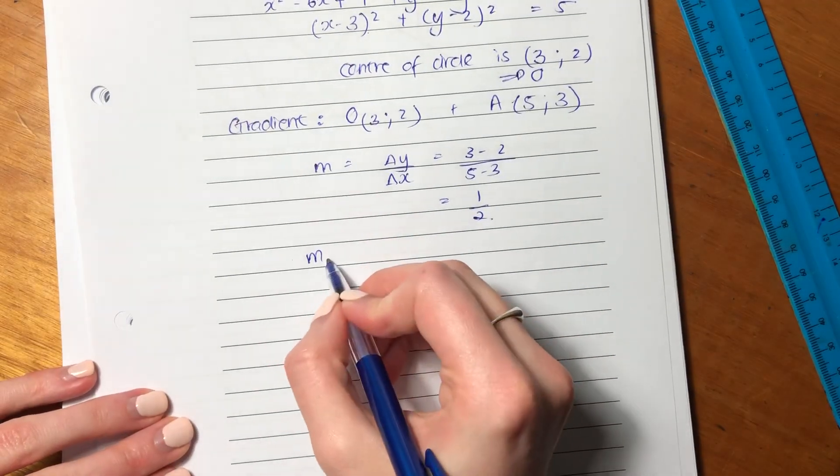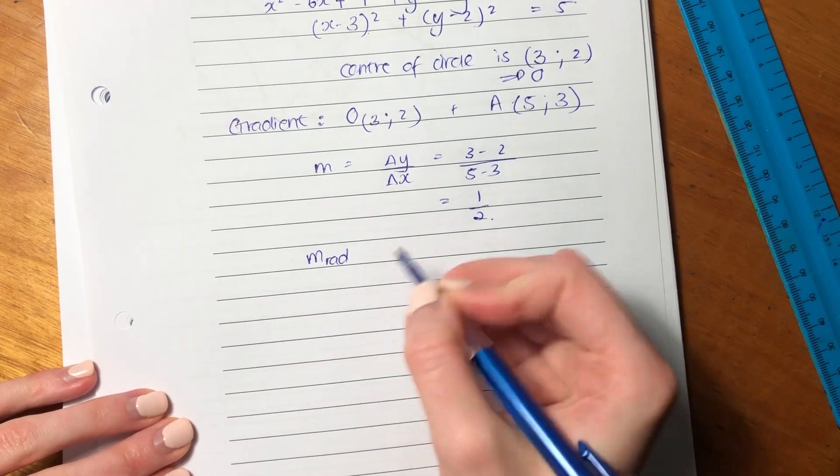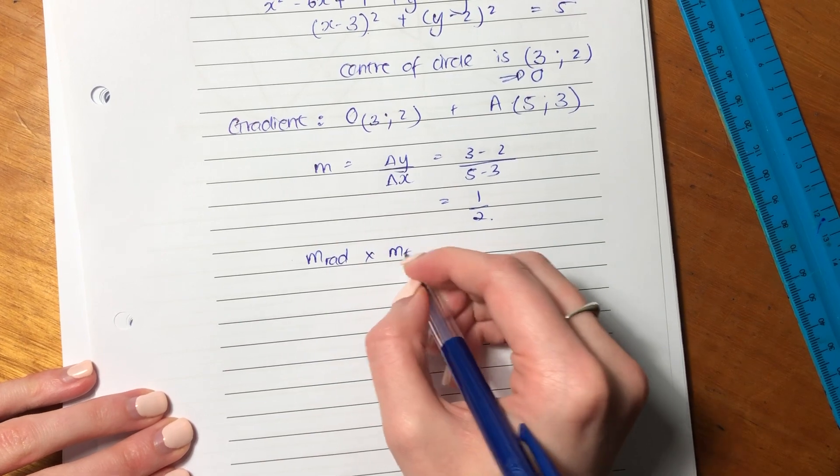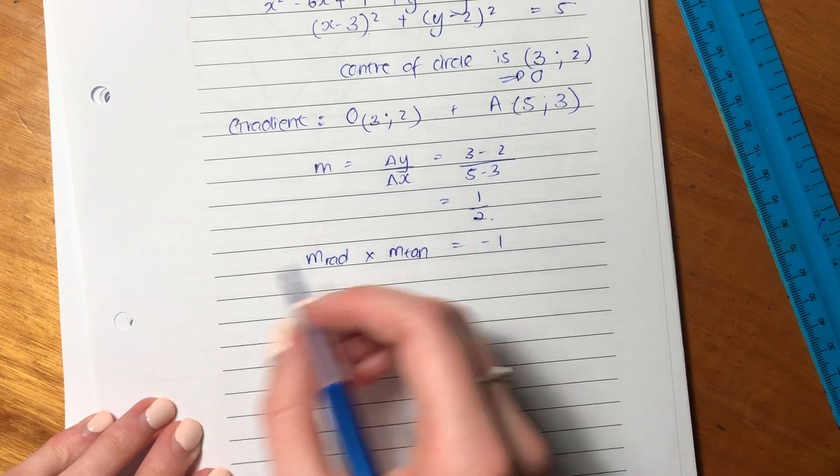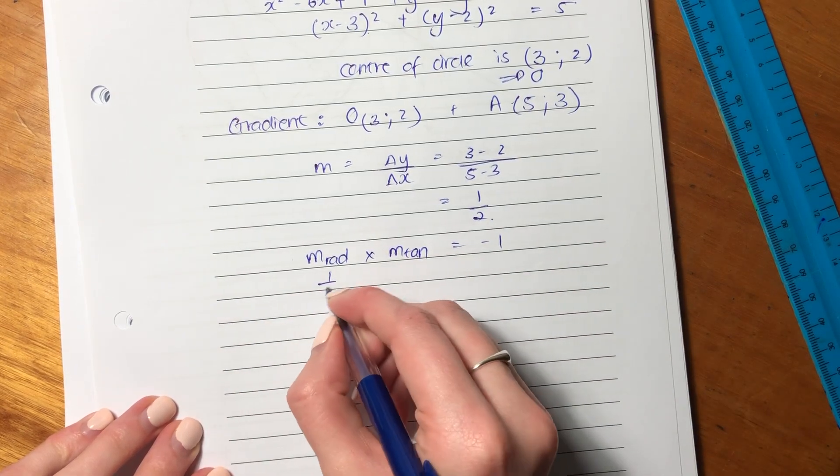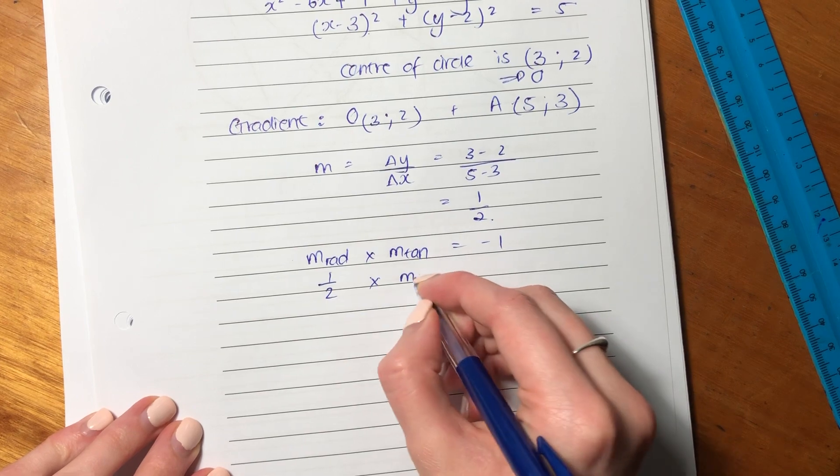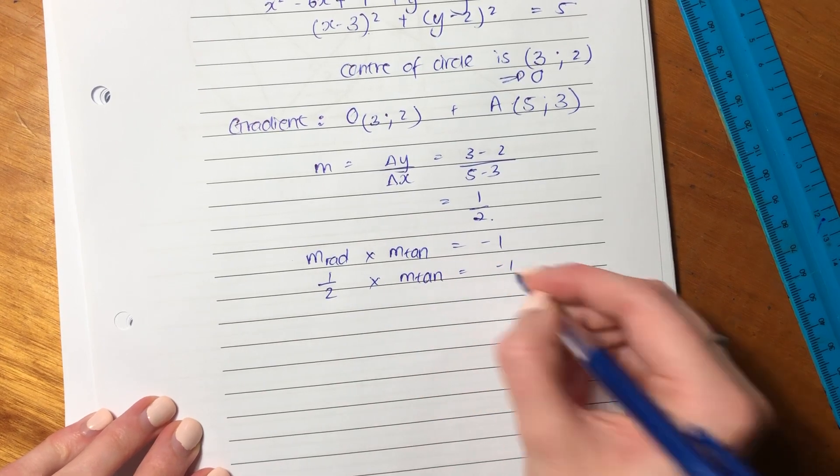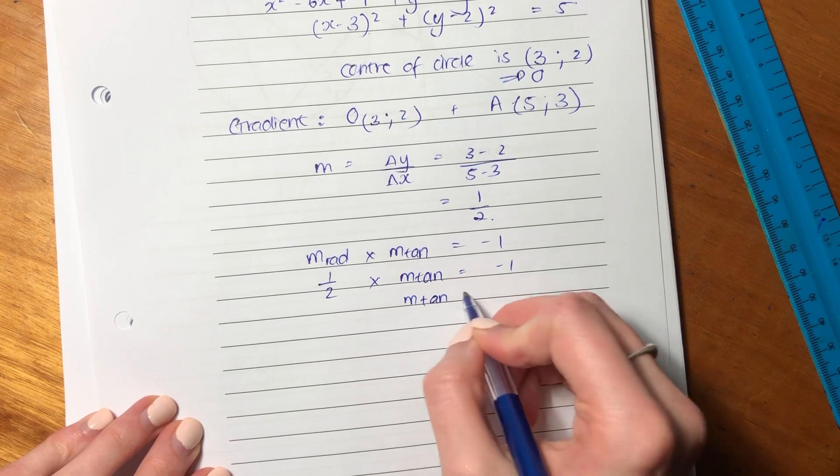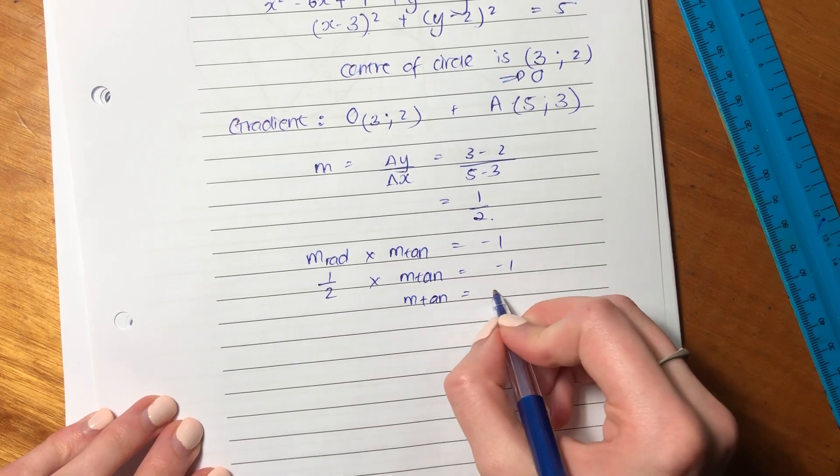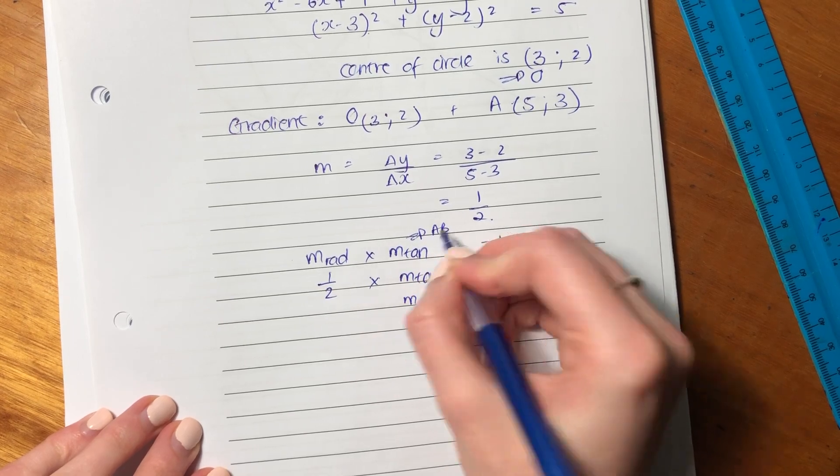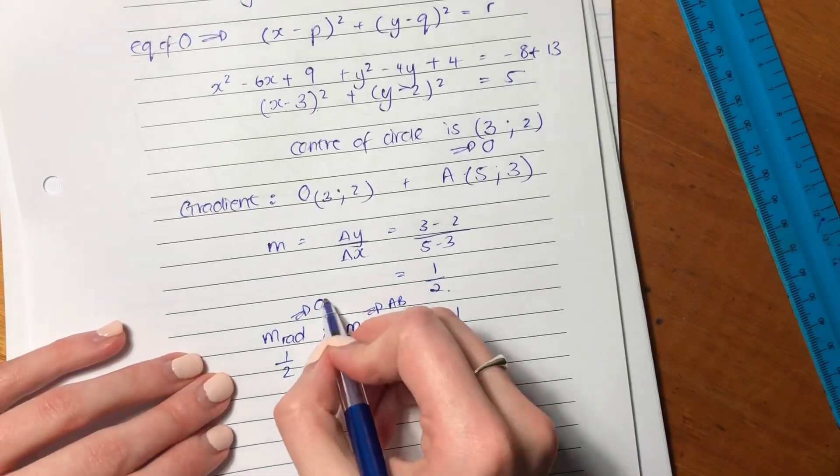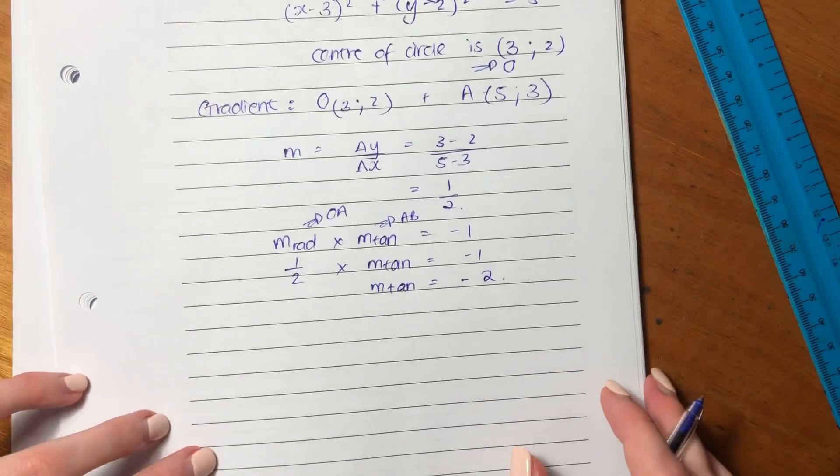Now we say the m, the gradient of the radius times by the gradient of the tangent has to equal negative 1. So we know that the gradient of the radius equals a half. We've just calculated that. So now we know that the gradient of the tangent has to equal negative 2. Remember the tangent here is just AB, and the radius here is OA. Just so that we're on the same page.